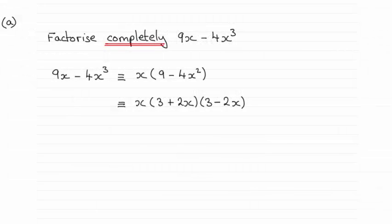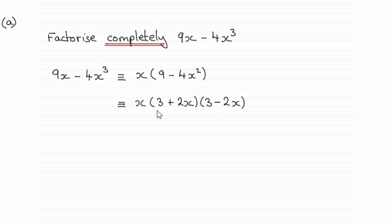Hi there. For this question we're asked to factorise completely 9x minus 4x cubed, and as you can see it's identical to x times 3 plus 2x times 3 minus 2x. Obviously you could have 3 minus 2x times 3 plus 2x in this place here.